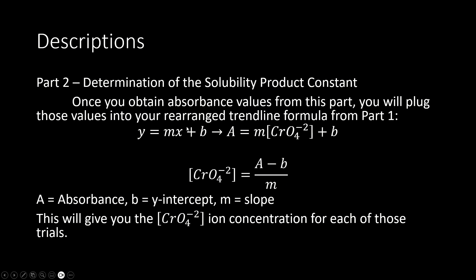If your linear trend line shows a negative b value — say b is negative 5 — then subtracting b would be minus negative 5, or plus 5. Keep the actual sign of b for the value itself. Just to clarify, this formula is not from the molar absorptivity section. Here, b is the y-intercept and m is the slope of your linear trend line, but A is still absorbance. Plugging in everything correctly gives you the chromate ion concentration for each of the three solutions in part two.